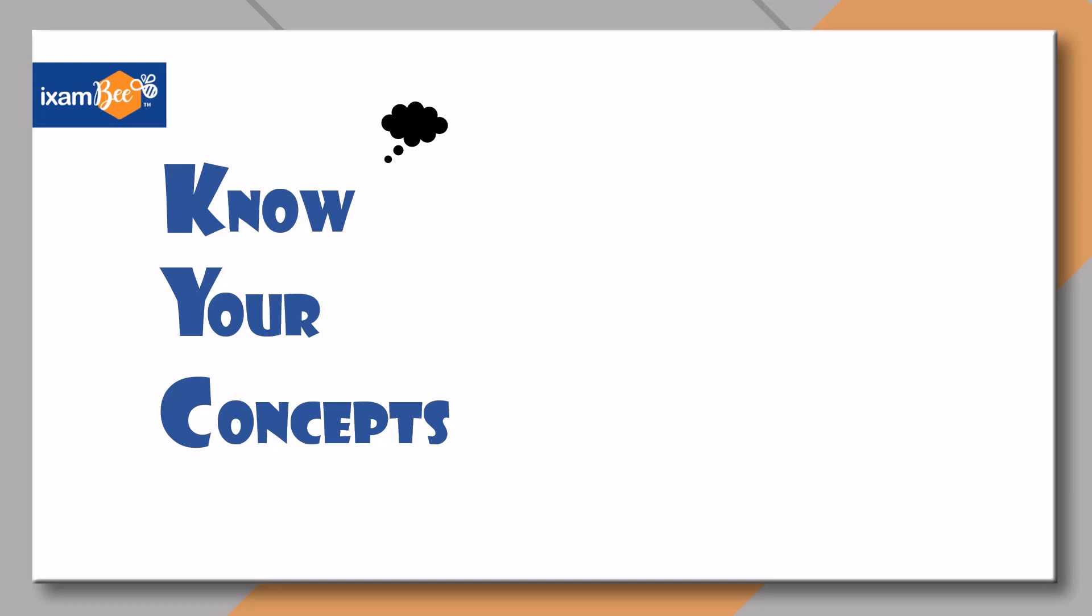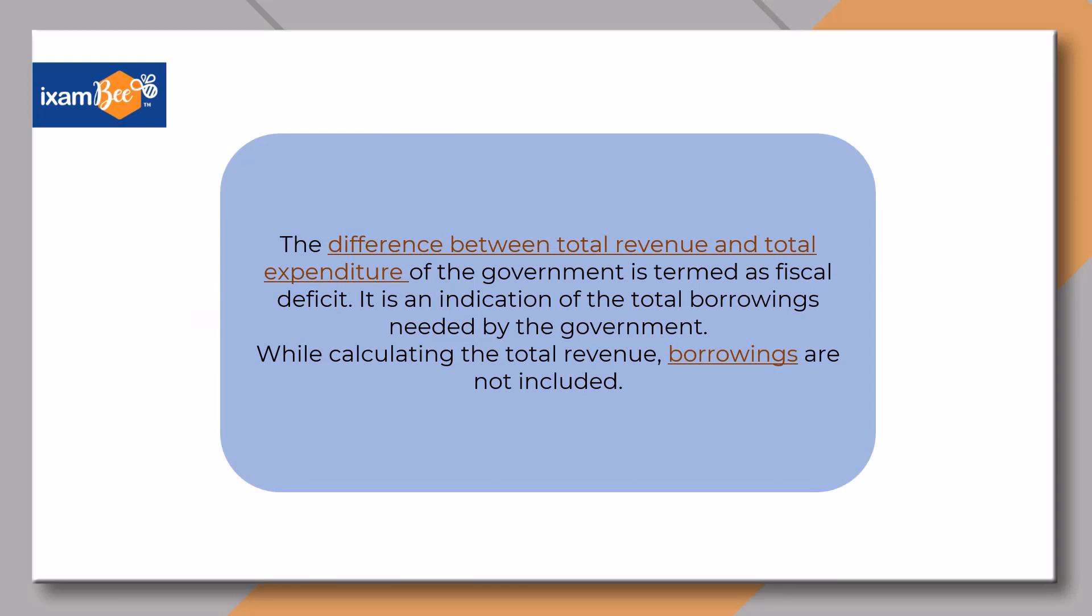Let us look at the definition first. The difference between the total revenue and total expenditure of a government is known as fiscal deficit.